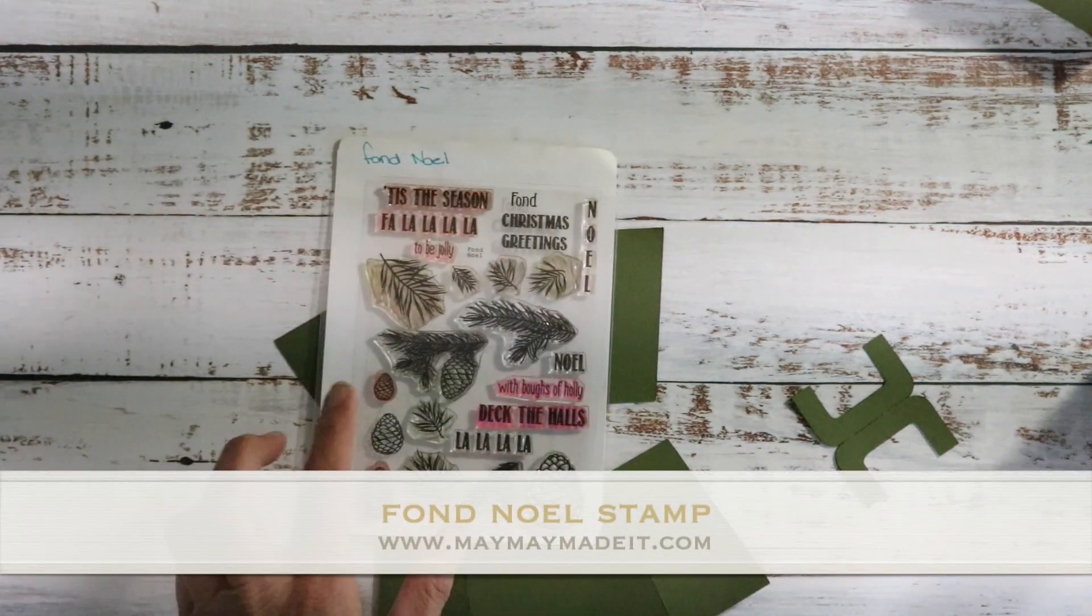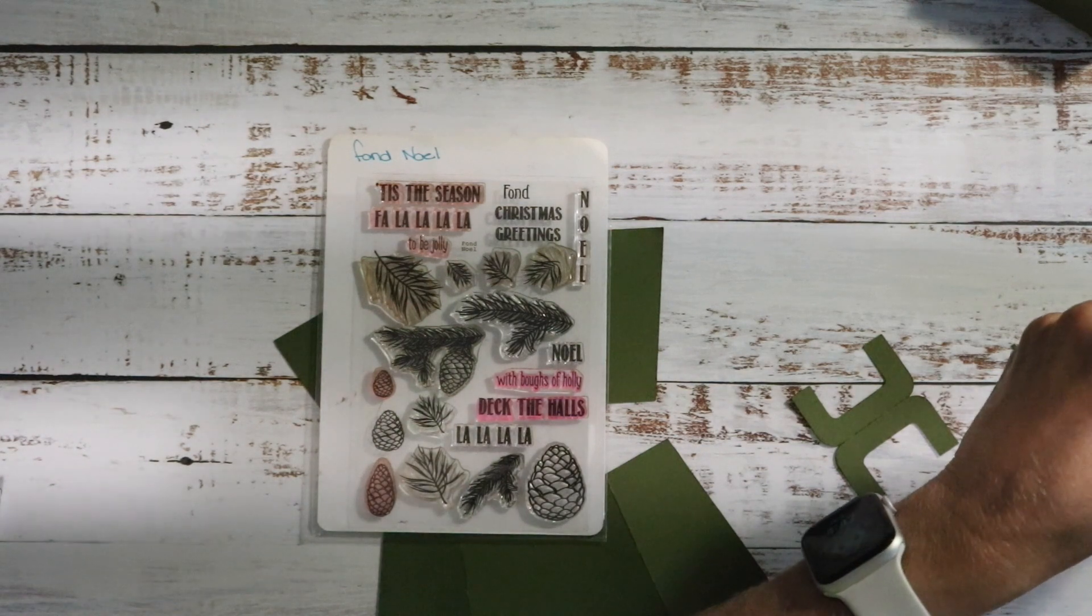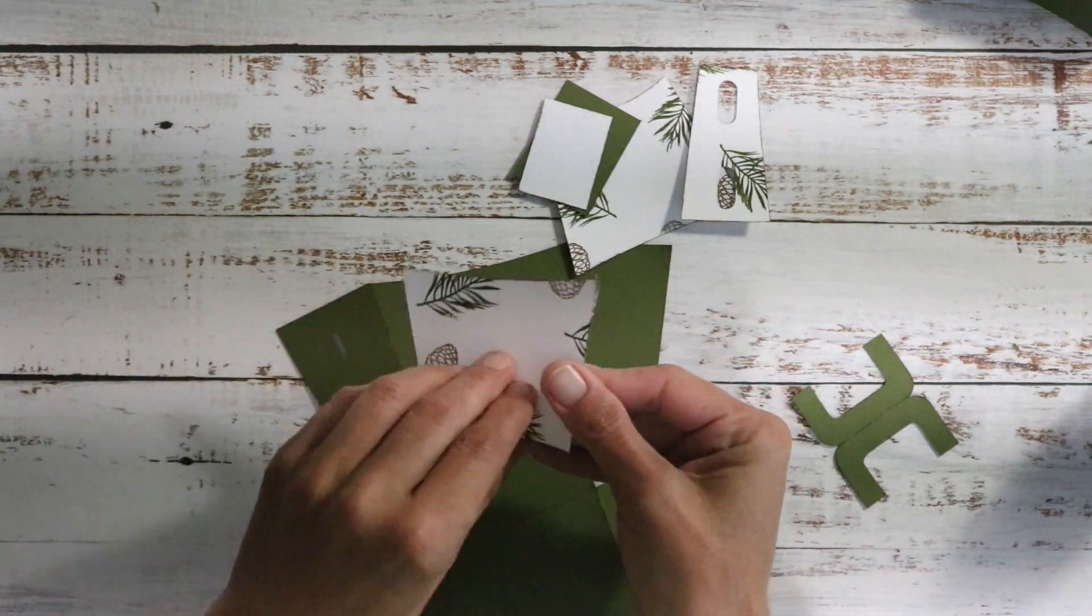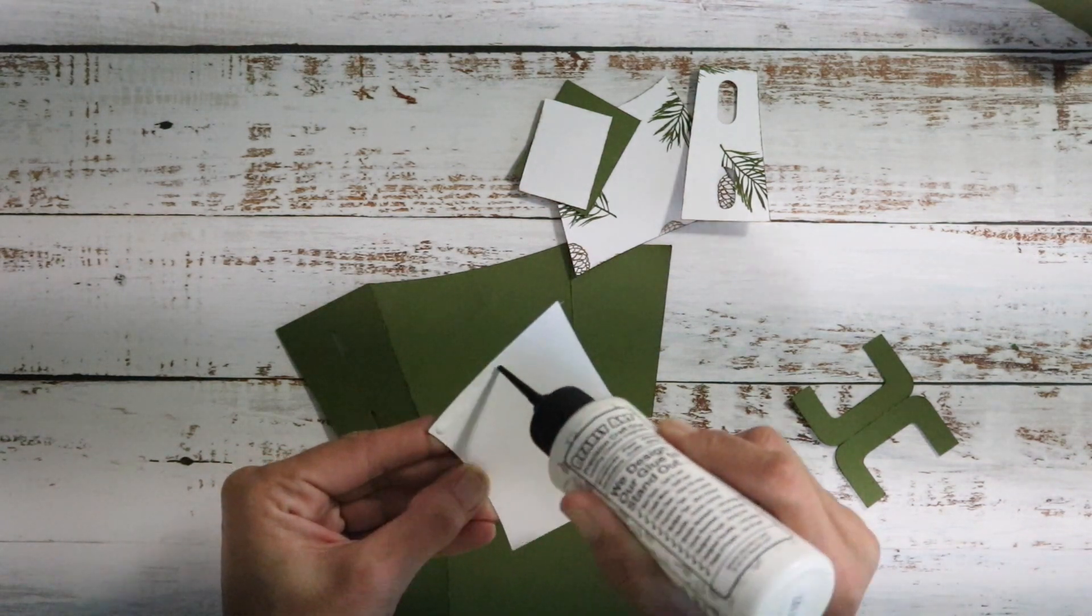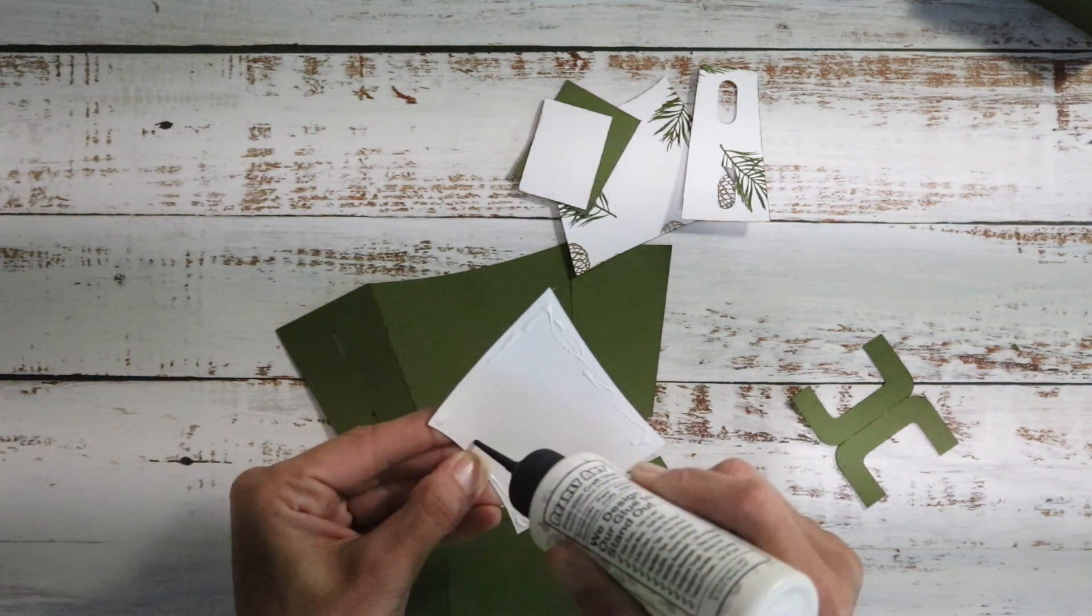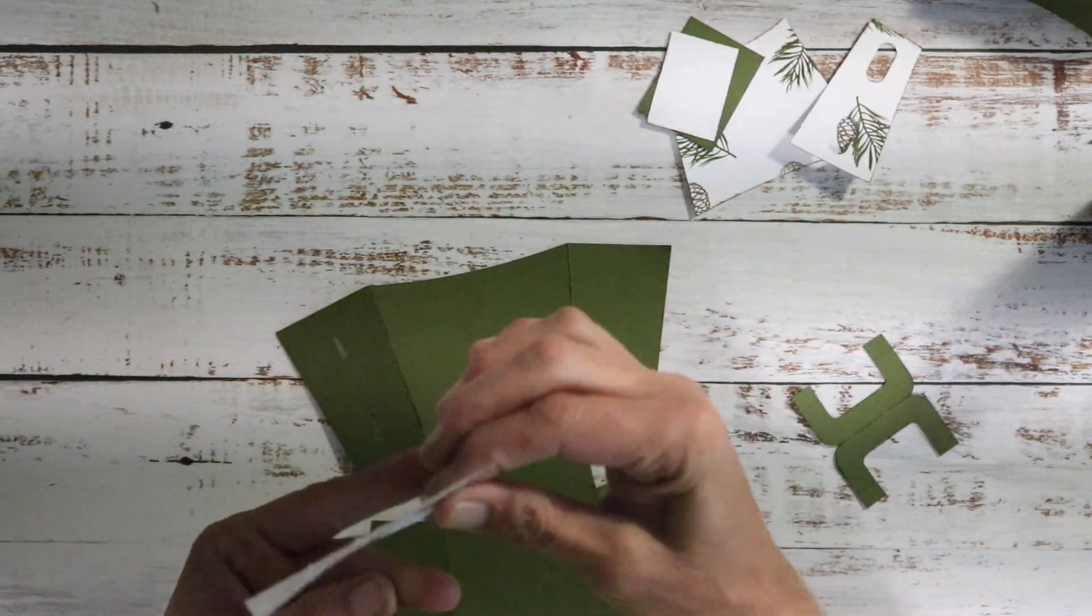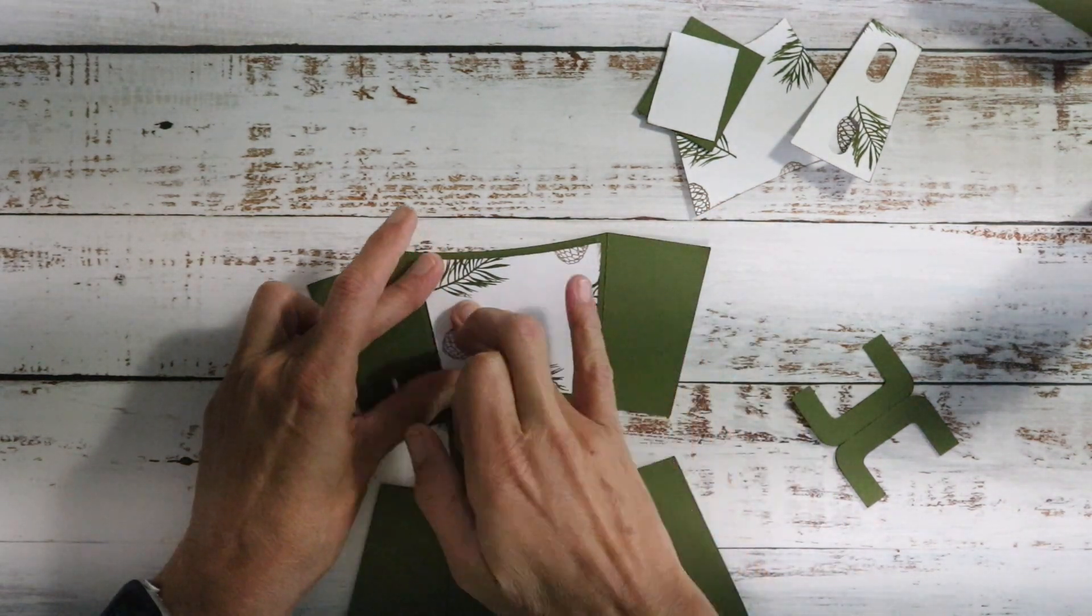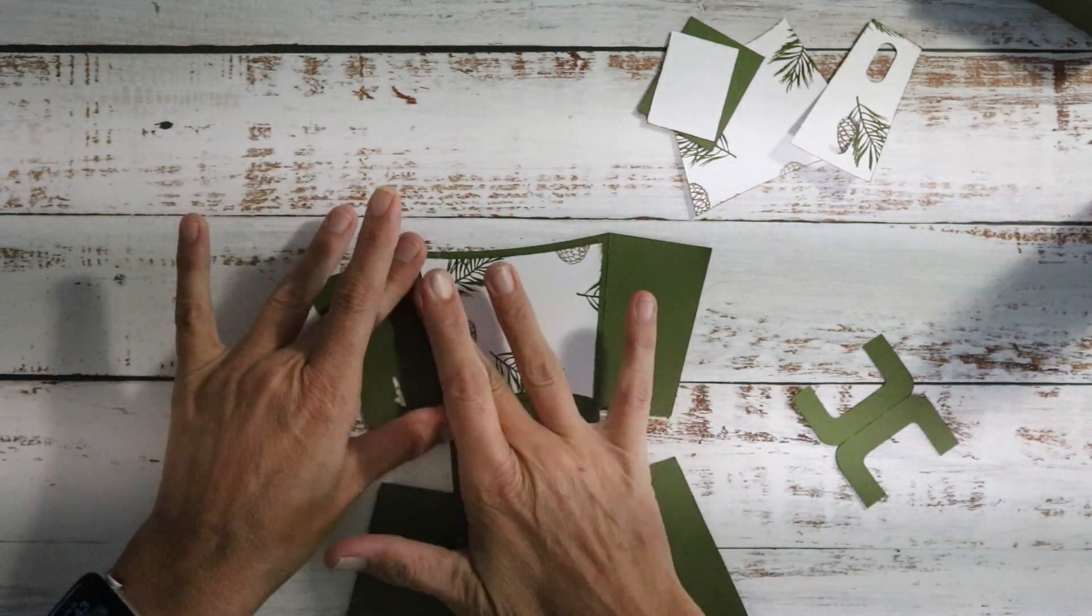I'm going to get that started and I already made my patterned paper as well. For that I used Lawn Fawn's Stamps Fond Noel. I used this greenery and the medium sized pinecone to make my own paper. So we're just going to take this, put glue on the back and adhere it down. Another option if you don't want to add the paper you can just stamp directly on your cardstock piece as well. You can eliminate the papers altogether but super simple.